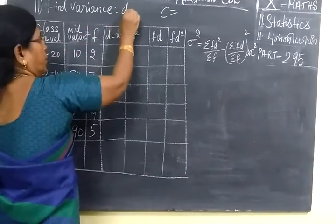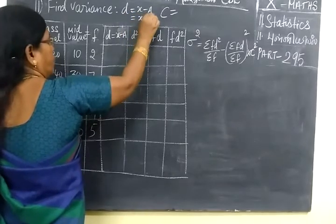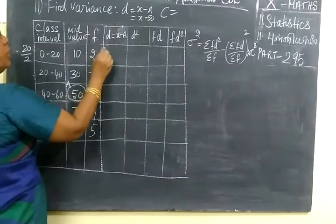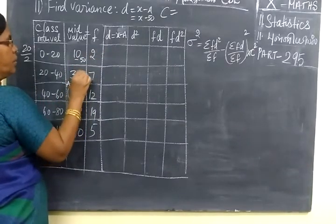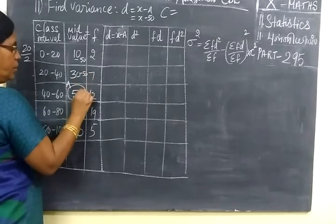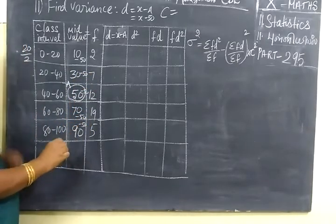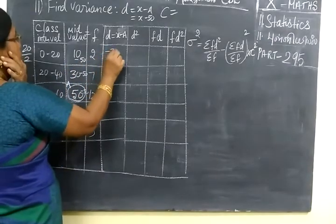So D equals to X minus A. So X minus 50. So you can write minus 50. It will open you. Minus 50, then minus 50, minus 50, minus 50. So if you separate you get minus 40, minus 30.